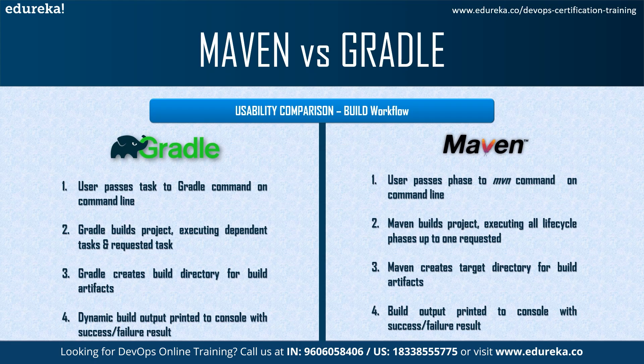You can understand that the console output for Maven shows all information-level log statements and test output, while for Gradle it has a dynamic console that shows only the task it is currently working on, with a final success or failure message.